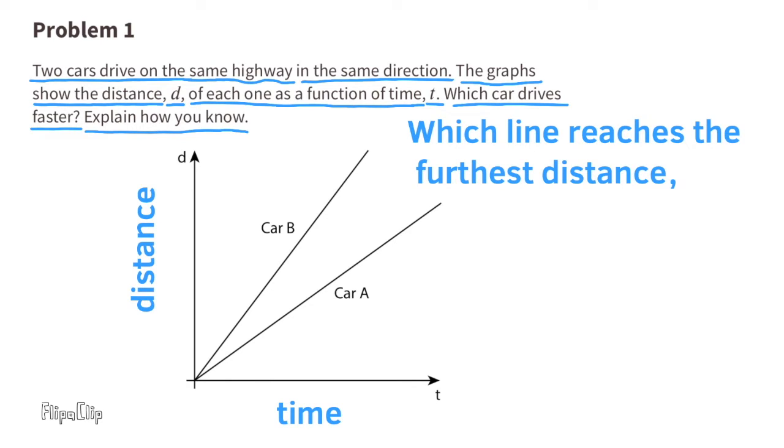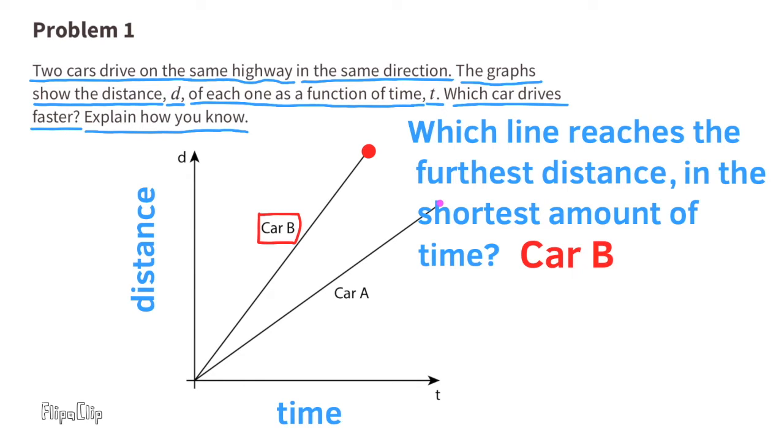Which car drives faster? Which line reaches the furthest distance in the shortest amount of time? The line for car b reaches the furthest distance in the shortest amount of time. So car b drives faster.